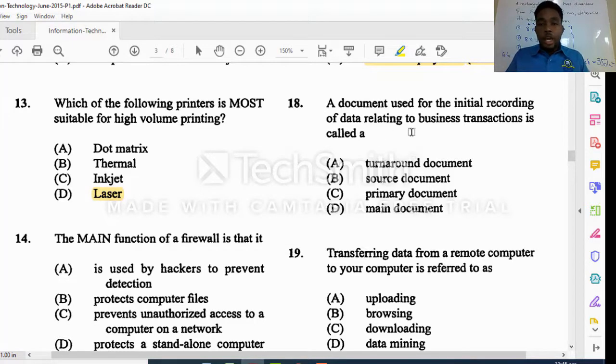A document used for initial recordings of data relating to a business transaction is called what. We know a turnaround document is produced from the computer and can be used to input data back into the system. But because it says initial recording, source document would be the first document, and that document can also be used in business transactions. It represents the original document. For this one it would be a source document, not a primary document.